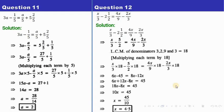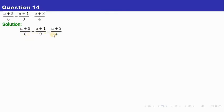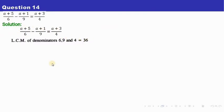You may pause the video to note down. Let us move on to question number 14. Here again we can see that the unknown is A. Before we solve it, we see that we have got denominators 6, 9, and 4. So we have to find the LCM of these. The LCM of 6, 9, and 4 will be 36. Our next job is to multiply each term by 36.